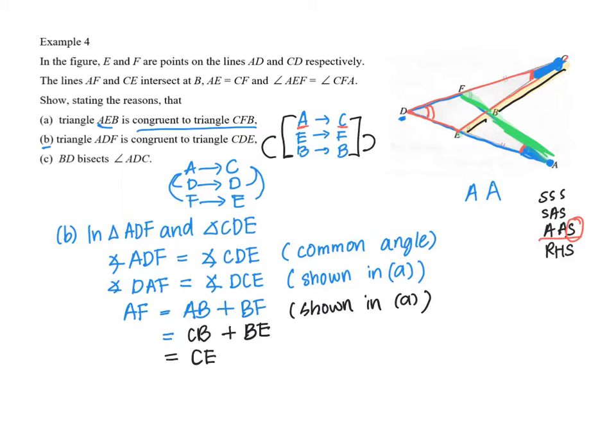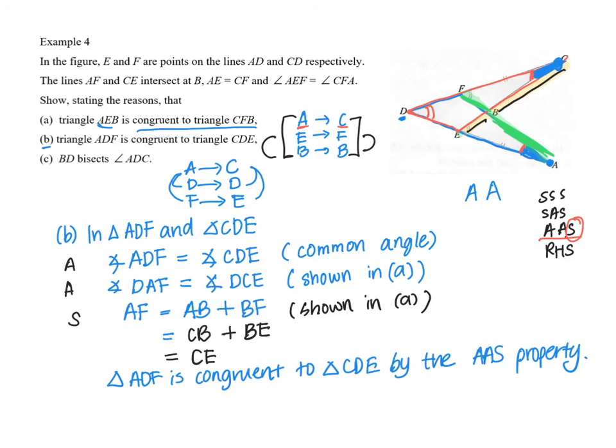So now I have an angle, angle, and one side. So therefore I can conclude that triangle ADF is congruent to triangle CDE by the AAS property. Thank you.